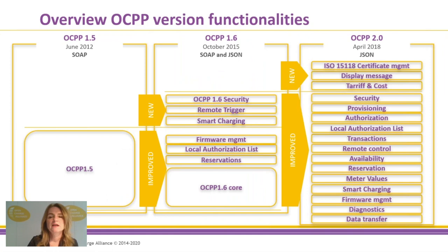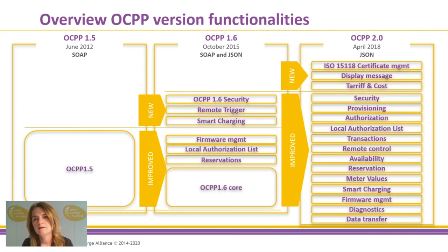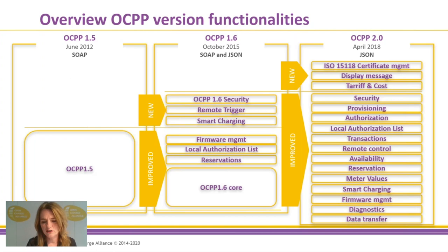Briefly, an overview of the different versions: the 1.5 version from 2012 only used the SOAP transport mechanism. OCPP 1.6 from 2015 supports either SOAP or JSON. Compared to 1.5, 1.6 added smart charging, remote trigger, and a white paper on OCPP 1.6 security. The 2.0 version only supports JSON — SOAP was dropped by industry judgment. OCPP 2.0 includes many improvements over 1.6 plus new features: display of messages on the charging station, displaying and sending of tariffs and costs, and everything needed to run ISO 15118, the protocol from a charging station to an electric vehicle.